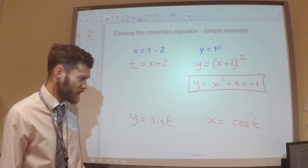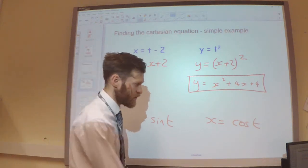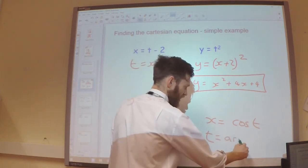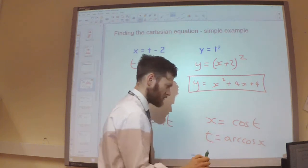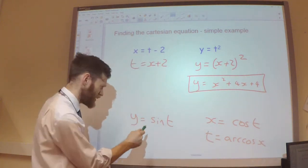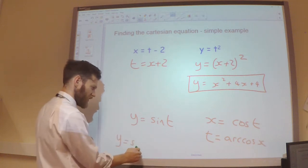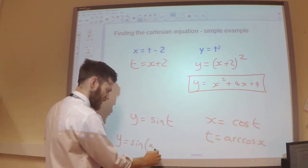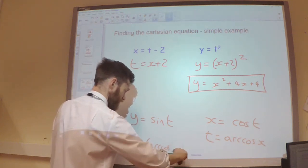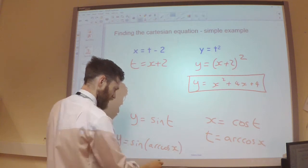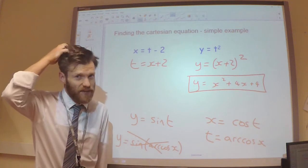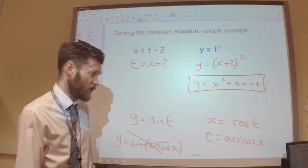Making t the subject is quite awkward because I will have to have t equals arc cos x and then substituting that into here it gets quite messy because then I've got y equals sine arc cos x. And this sine of arc cos is quite messy so we don't really want to go down that route, especially when there's a much better option available to us.